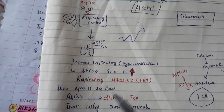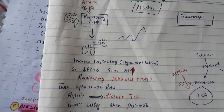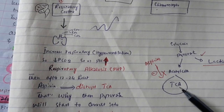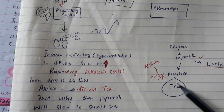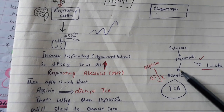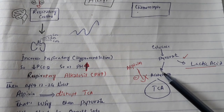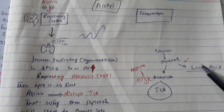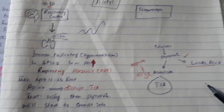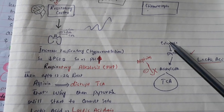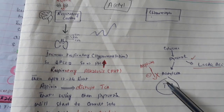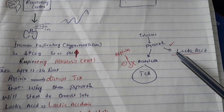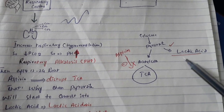After 12 to 24 hours, aspirin disrupts the tricarboxylic acid (TCA) cycle. If this cycle is interrupted, pyruvate will not convert into the TCA cycle pathway, so pyruvate starts to convert into lactic acid. This lactic acid accumulation causes lactic acidosis.